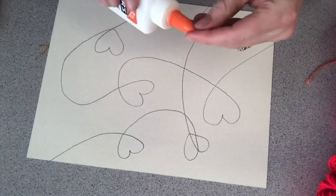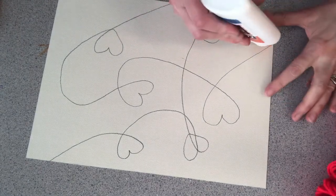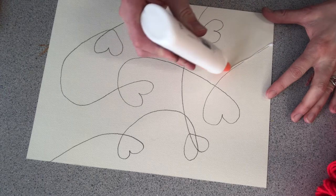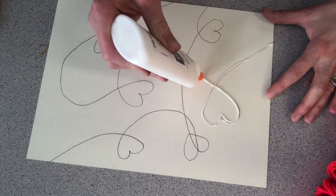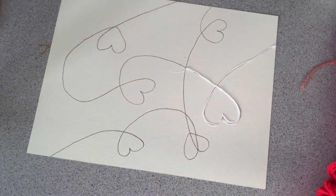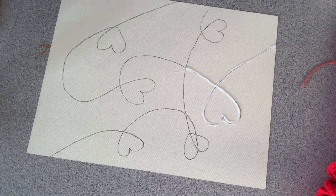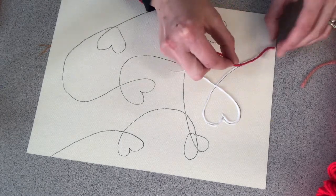And then what you're going to do is you are going to do a line of glue. I wouldn't do a ton at first because you don't want it to start drying as you put the yarn down. But put some glue down.